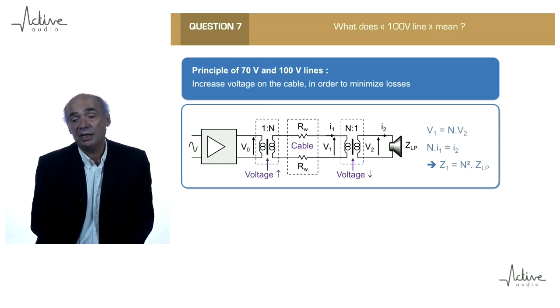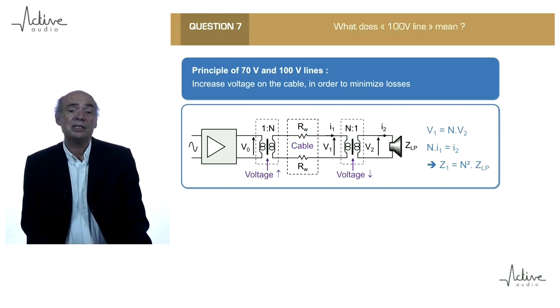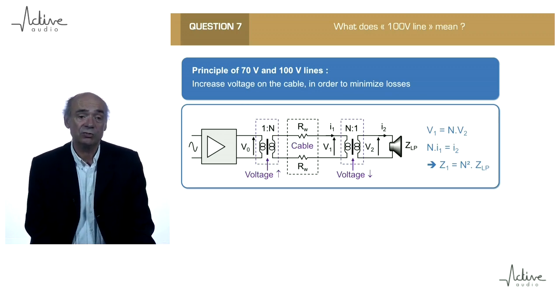Then the impedance of the line on the cable is increased, like the square of the transformer ratio.